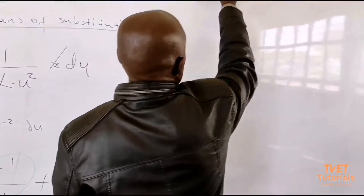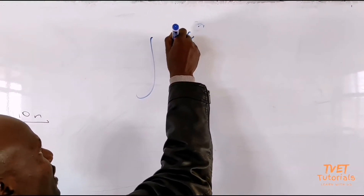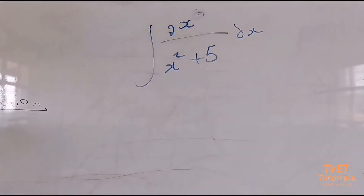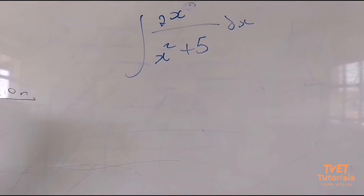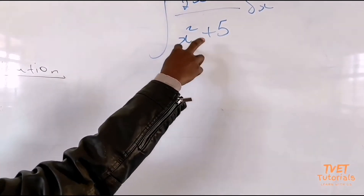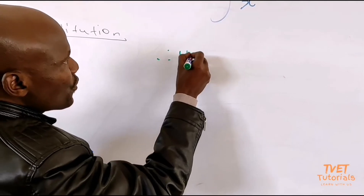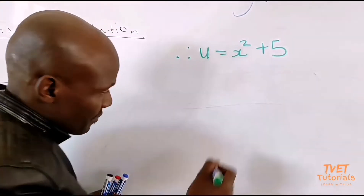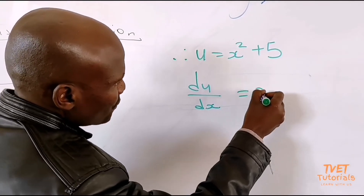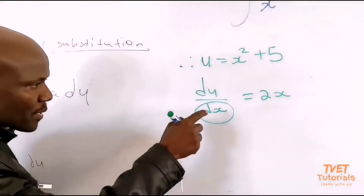Let's take the next example. We are given ∫(2x / (x² + 5)) dx. Check which term's differentiation gives the other. If you look at the denominator, the differentiation of the denominator is going to give you the numerator. So our u is going to be x² + 5. Then you differentiate: du/dx = 2x. As I said, always make dx the subject of the formula.